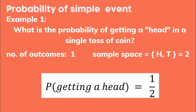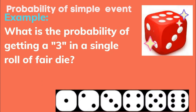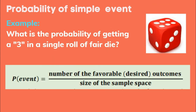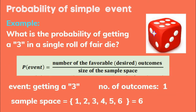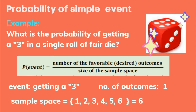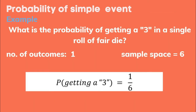Another example: what is the probability of getting a 3 in a single roll of a fair die? Remember, we identify first the event, the number of favorable outcomes, and the size of the sample space. The event is getting a 3. There is only one 3, so the number of outcomes is 1. The size of the sample space is 6, since there are 6 possible outcomes when you roll a fair die. Therefore, the probability of getting a 3 is equal to 1 over 6.